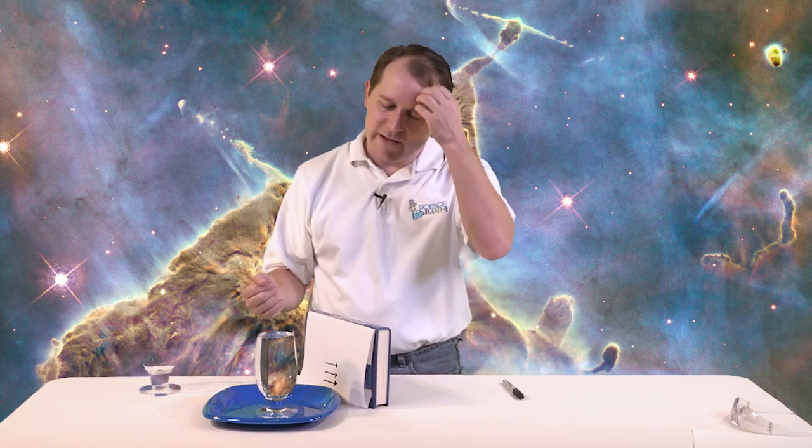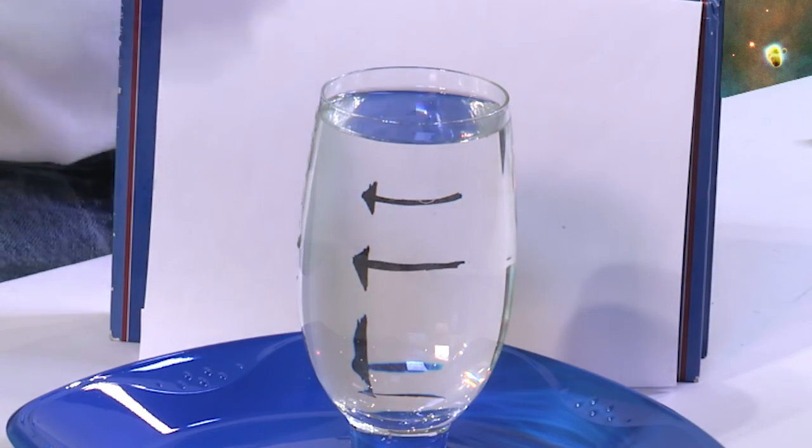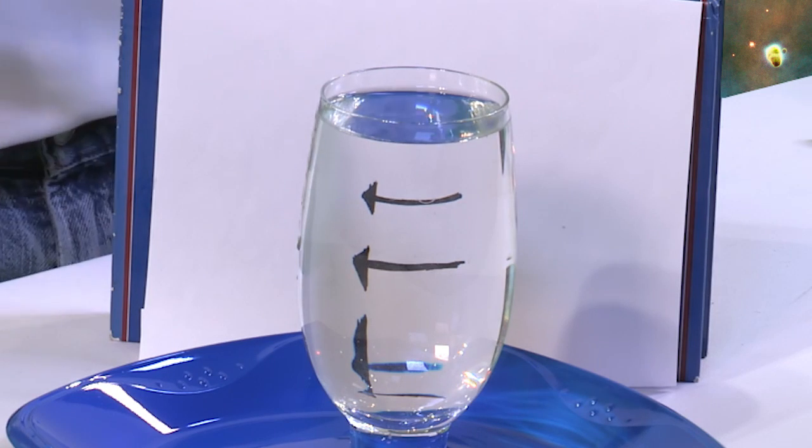Now you can clearly see what's happened. The arrows were pointing one direction and as soon as we put the water in there, the arrows flipped direction. So it's a very simple experiment, but it shows something so incredibly important.